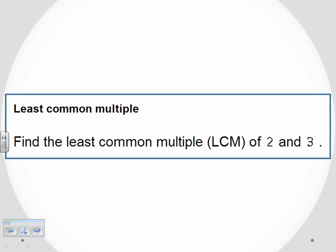So we're asked to find the least common multiple of two numbers, two and three in this case.